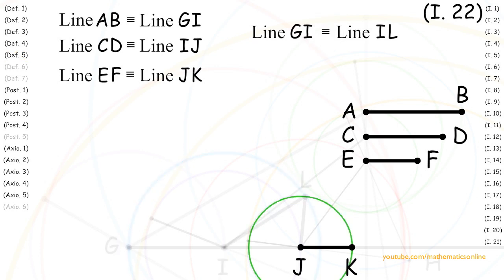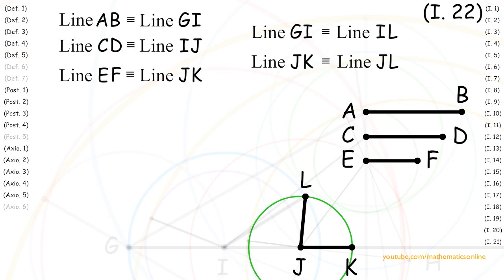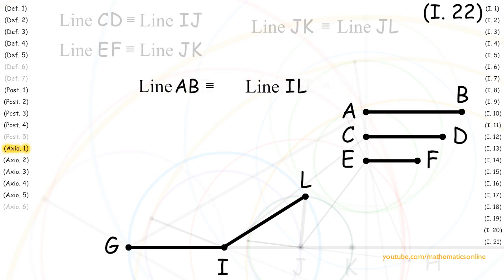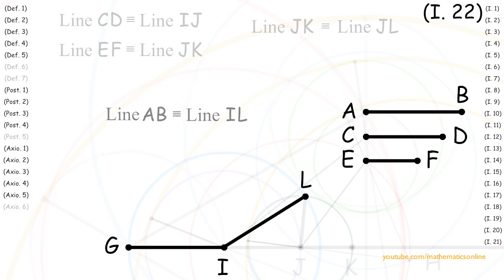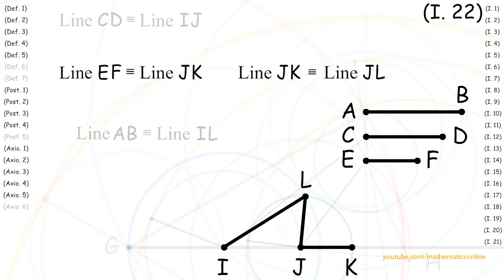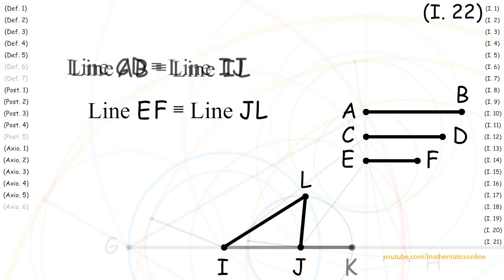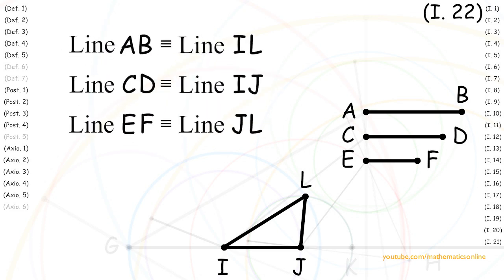Next, looking at circle JK, we can see that line JK is the radius and line JL is also the radius. So, by Definition 5, both lines are congruent. Now we have line AB is congruent to line GI and line GI is congruent to line IL. By Axiom 1, line AB is congruent to line IL. Next, we have line EF is congruent to line JK and line JK is congruent to line JL. By Axiom 1, line EF is congruent to line JL. And therefore, we have proven that triangle IJL has been constructed with its sides congruent to the three given lines.